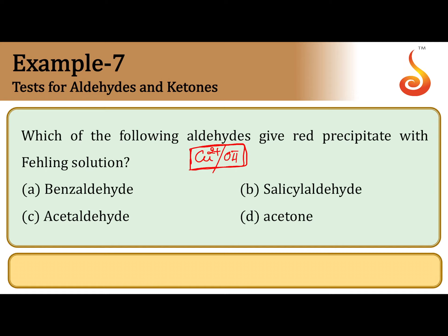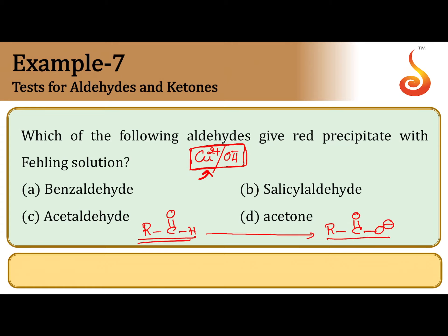Aliphatic aldehydes undergo oxidation by alkaline cupric ions present in Fehling's solution to give carboxylic acids or carboxylate salts. Aliphatic aldehydes are oxidized to carboxylate ions by Fehling's reagent.